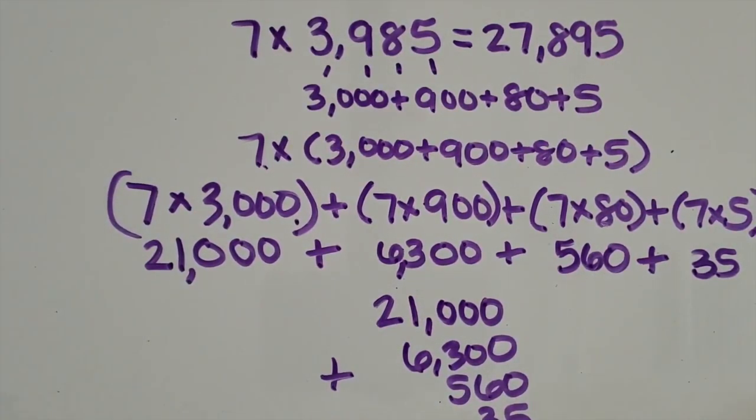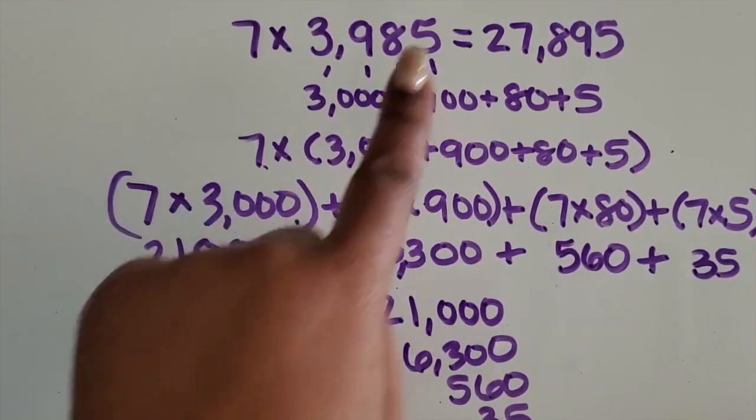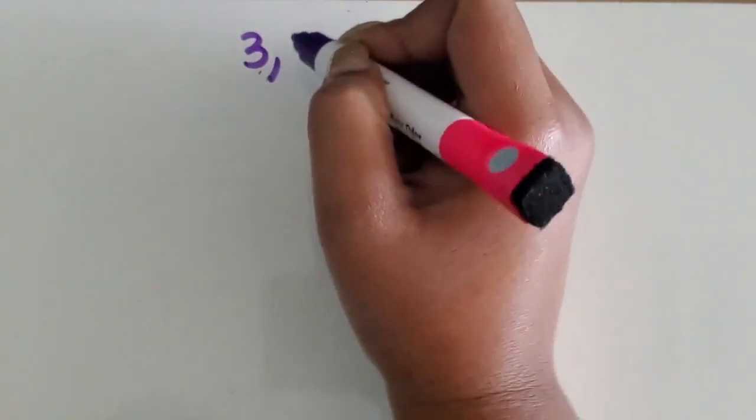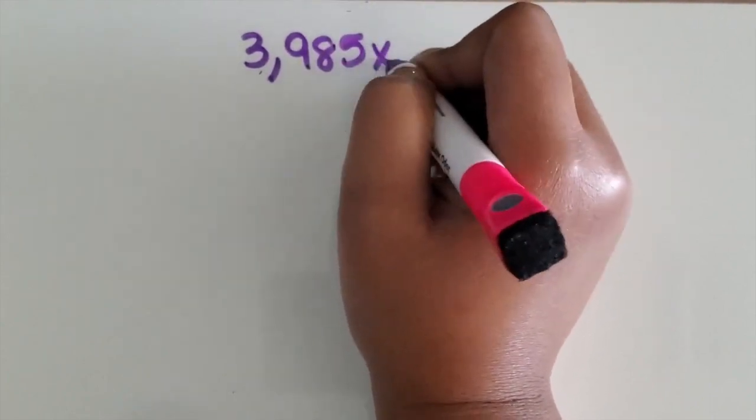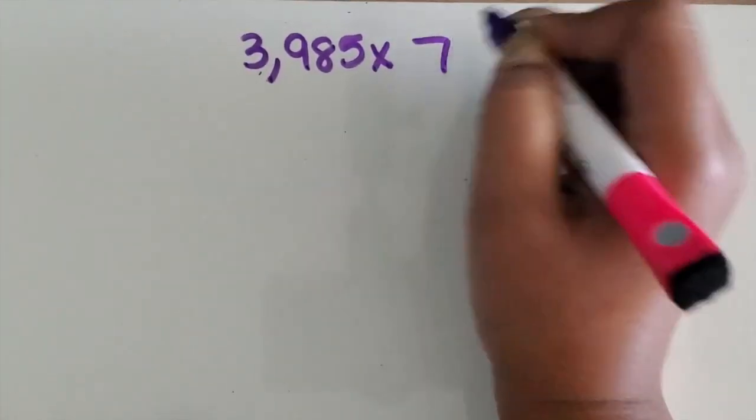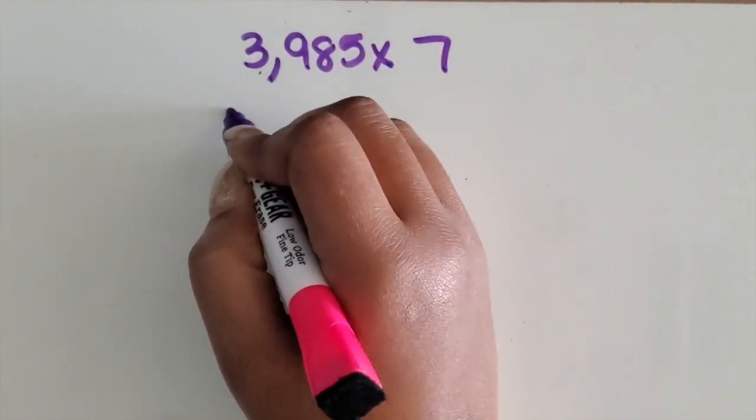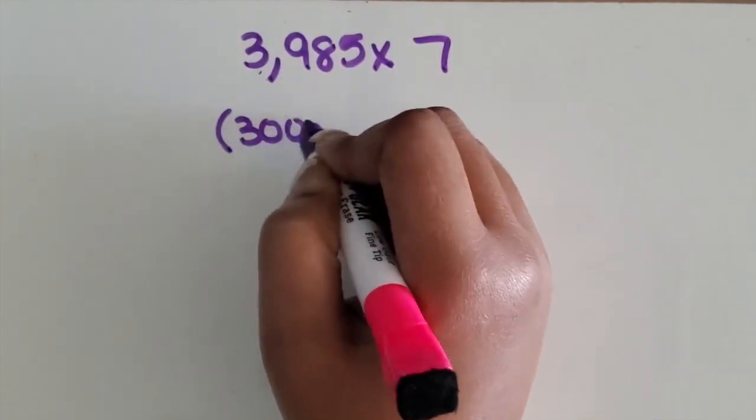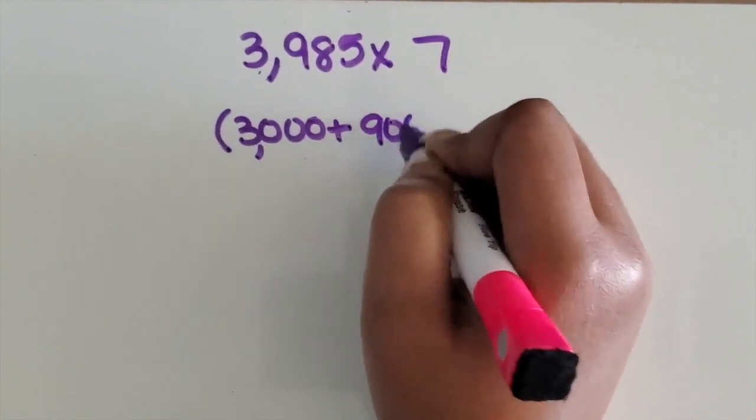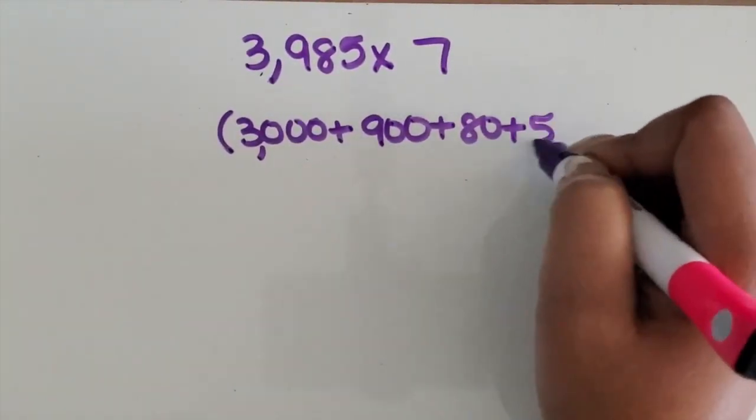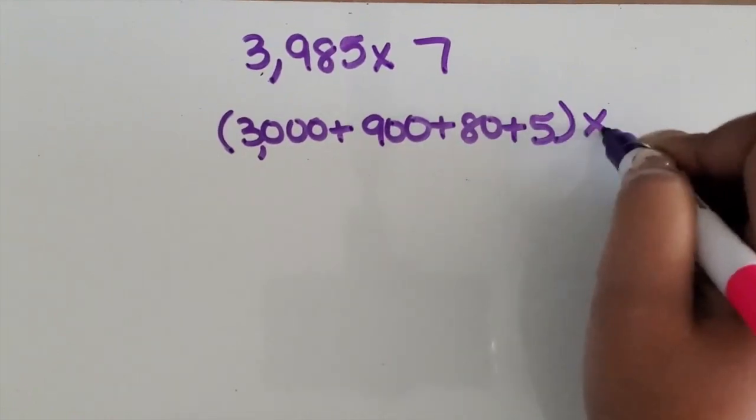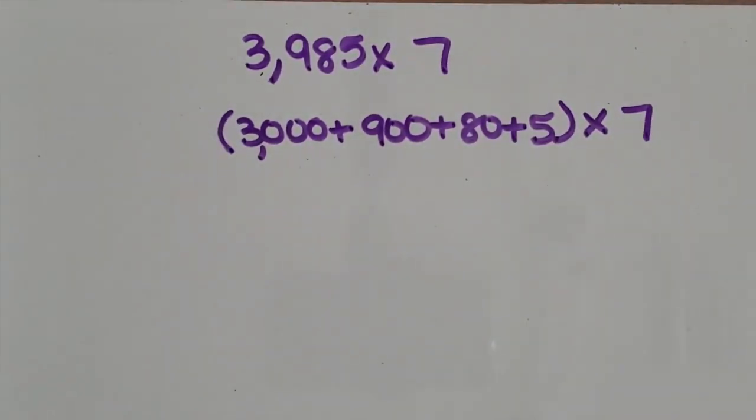Now we're going to look at how the problem will look if the factors were flipped or switched. So we are going to start with our four-digit number first, 3,985, and multiply that by 7. So we're going to decompose that into 3,000 plus 900 plus 80 plus 5. And we're multiplying that number by 7. So we're distributing the 7 with each digit.